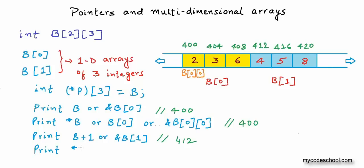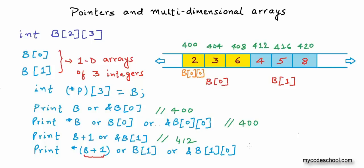Now what if I print *(b+1)? When we put an asterisk to dereference, the type of the pointer becomes important. 'b' is a pointer to a one-dimensional array of three integers, so b+1 is also a pointer to a 1D array of three integers. When we dereference, we get the whole one-dimensional array of three integers starting at address 412. *(b+1) is the same as b[1], so we get b[1]. Printing b[1] returns a pointer to the first integer in b[1], which is at address 412. So this output is also 412.